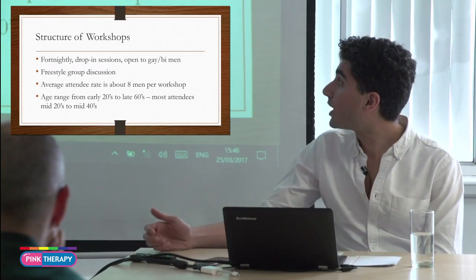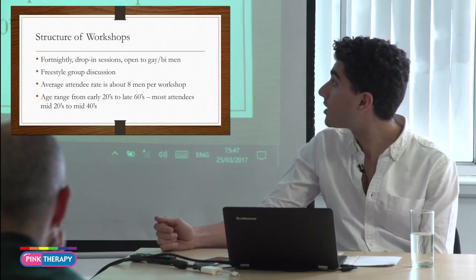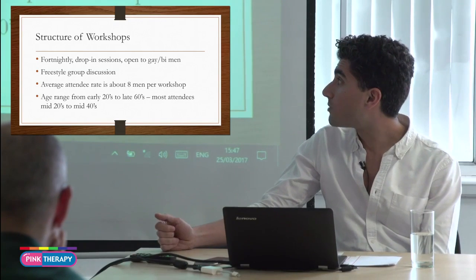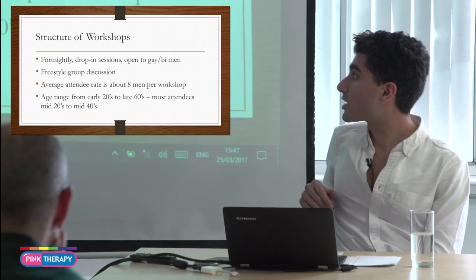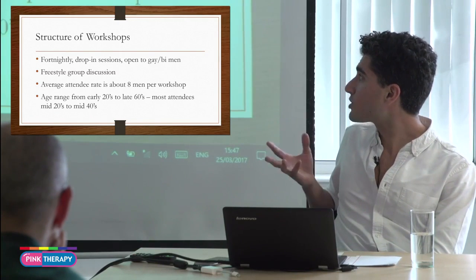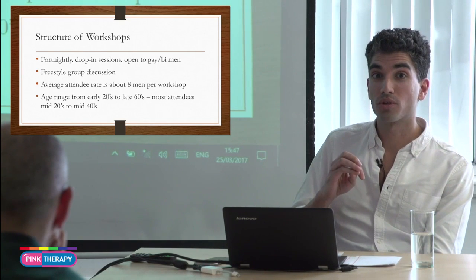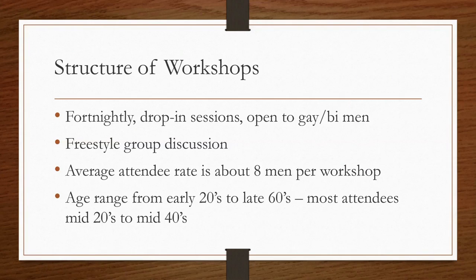The structure is quite simple. They are fortnightly, drop-in sessions open to gay and bi men, carried out in a free style group discussion. Each workshop has on average about 8 men, although the least popular workshops got 1 or 2 men and the most popular workshops got about 20 men. The age range for these workshops ranges from men in their early 20s to men in their late 60s, however most attendees were between mid-20s to mid-40s.